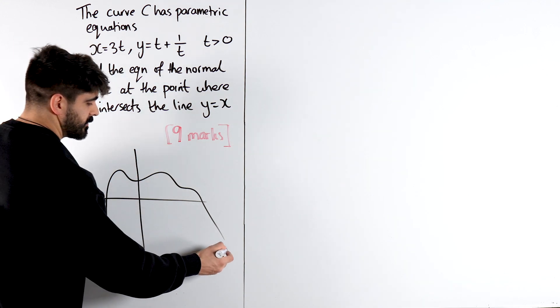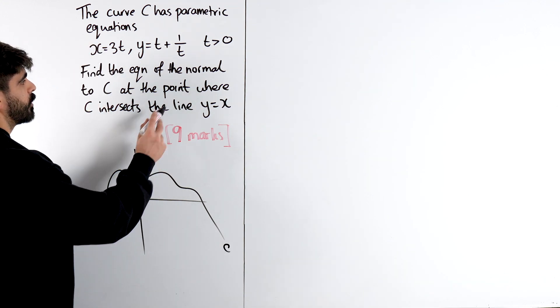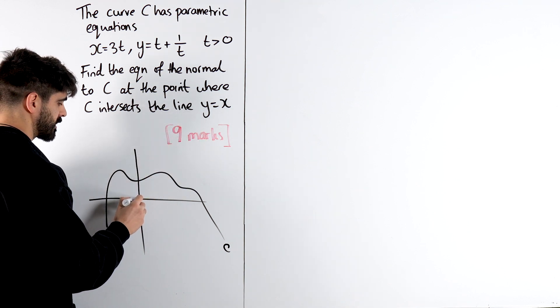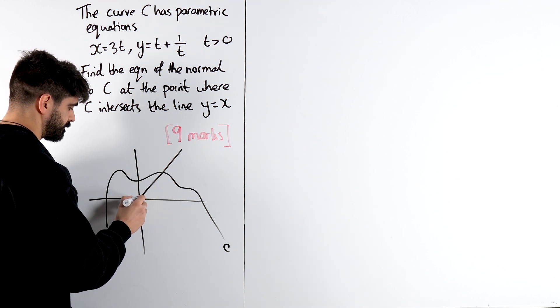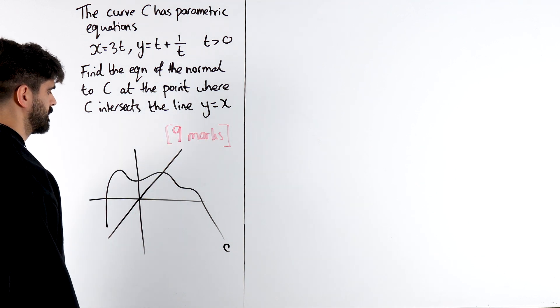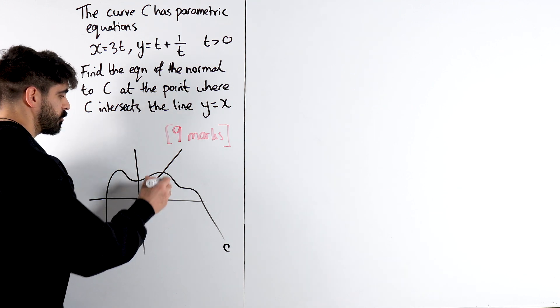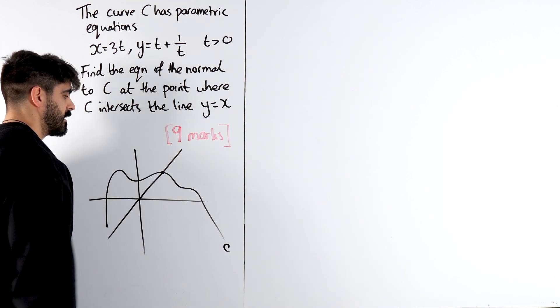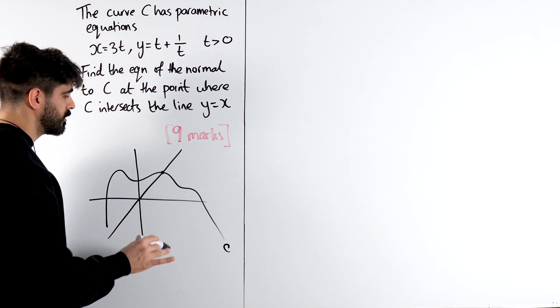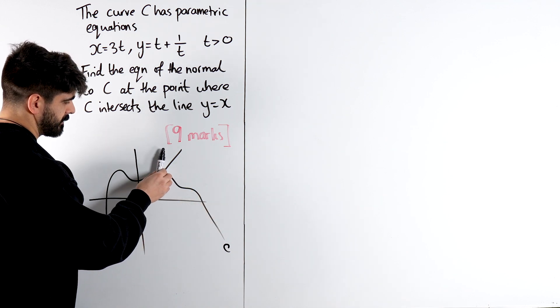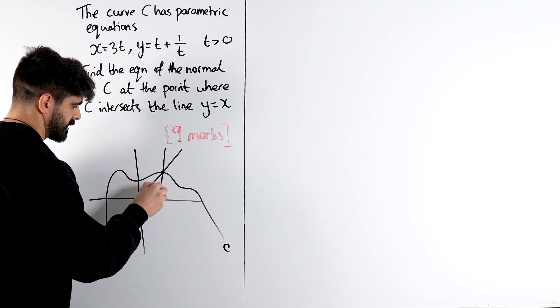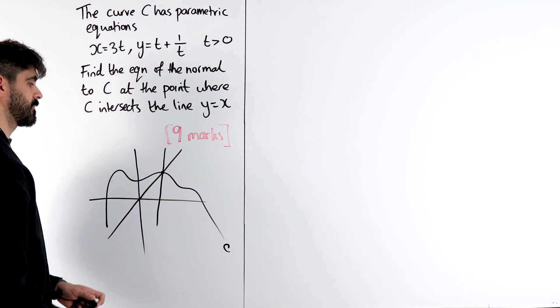I want to know where this curve C, where does it intersect the line Y equals X? Let's just say Y equals X here. It wouldn't intersect more than once in this case. Just pretend that goes back up this way. It's saying where they intersect, find the equation of the normal to this curve. Normal meaning perpendicular, maybe something like this. It's asking us to find the equation of this line.